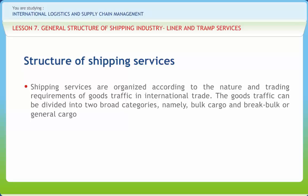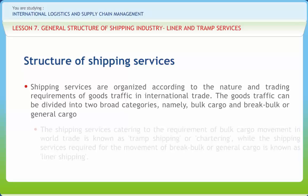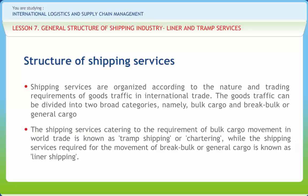Break Bulk or General Cargo, on the other hand, refers to manufactured or semi-manufactured, processed or semi-processed goods that move invariably in different types of packing like cases, crates, bales, rolls, bags, etc. In shipping parlance, these items are generally referred to as Ocean Transport General Merchandise. This classification of goods traffic in world trade between Bulk Cargo and General Merchandise is extremely important because of the significant differences in the nature and marketing characteristics of these two categories of cargos, and consequently in their transportation requirements. The shipping services catering to the requirement of bulk cargo movement in world trade is known as Tramp Shipping or Chartering, while the shipping services required for the movement of Break Bulk or General Cargo is known as Liner Shipping.